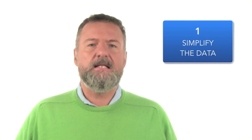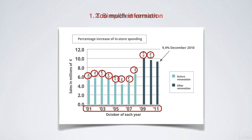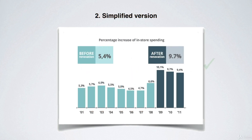Cut out everything else. To make the presentation of data effective, remove everything that can potentially distract the audience's attention, like backgrounds, redundant labels, shadows and 3D effects. Let us look at an example. This graph is far too complex and contains too much information. By deleting the non-relevant information, we get a much more informative slide. Do you see the difference?